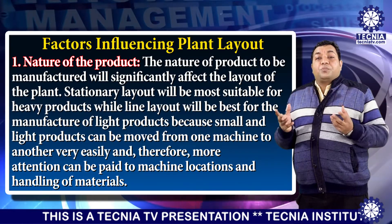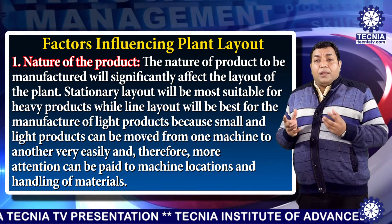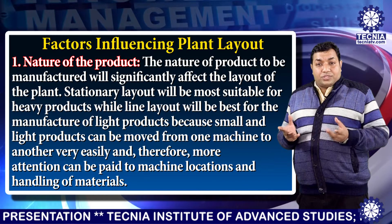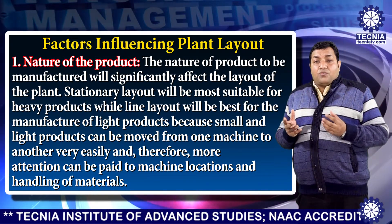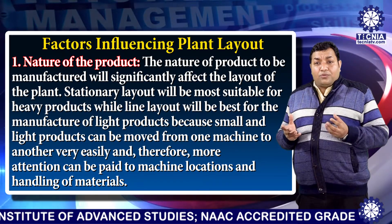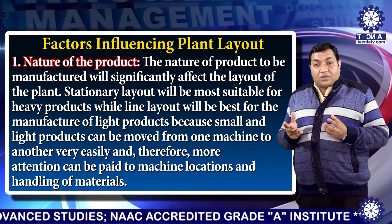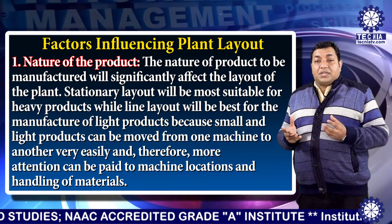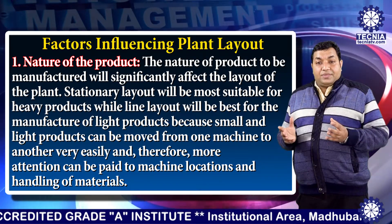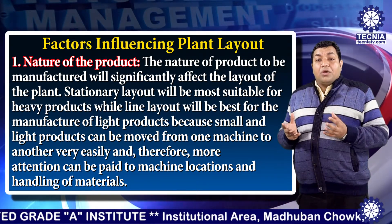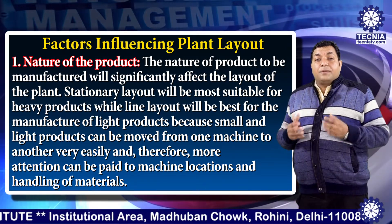The first factor is the nature of product. The nature of the product to be manufactured will significantly affect the plant layout. Stationary layout will be more suitable for heavy products, while line layout will be best for the manufacture of light products, because small and light products can be moved from one machine to another very easily. Therefore, more attention can be paid to machine location and handling of materials.